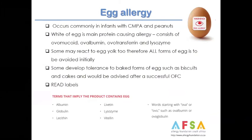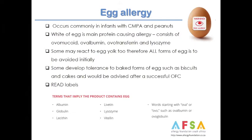Egg allergy also occurs commonly in infants, particularly those with cow's milk allergy and peanut allergy. The egg white is the main allergenic protein, consisting of ovomucoid, ovalbumin, ovotransferrin, and lysozyme. Some may react to the egg yolk too, so all forms of egg are initially avoided. Some develop tolerance to baked forms such as biscuits and cakes, usually advised after a successful oral food challenge. Reading labels is fundamental.